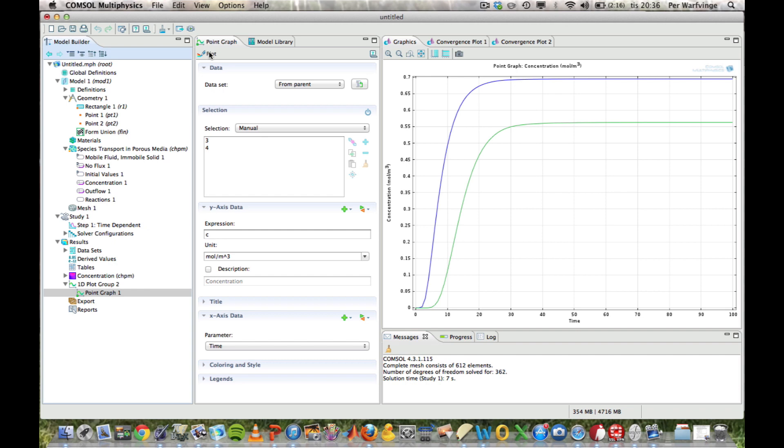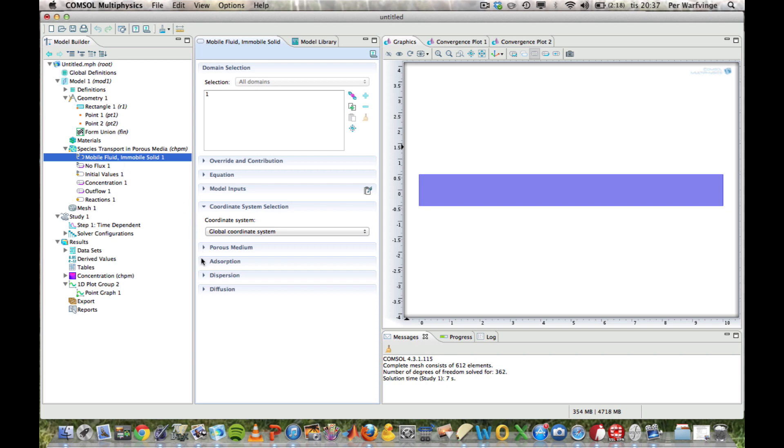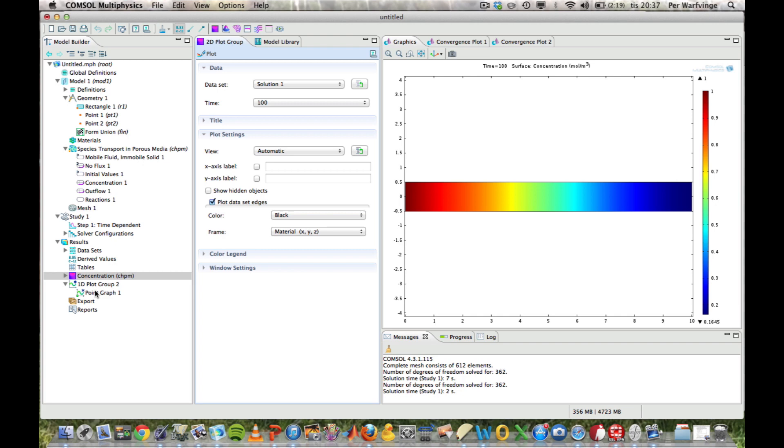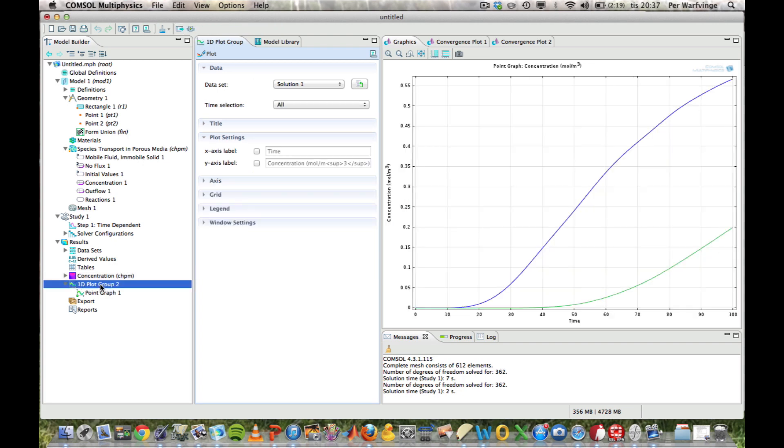Now, if we want to make a small change to the model. For example, change KD. We can just go back to mobile fluid in mobile solid. Go to absorption. Make it 10 times more willing to stay on the solid than in the water. Go to study. Make a computation. Go to the graph. And we see we get another result. In fact, the solid will move much slower through the system than before.